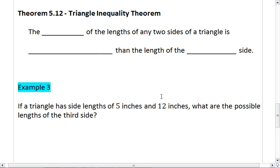This brings us to theorem 5.12. That tells us that the sum of the lengths of any two sides of a triangle must be greater than the length of the third side.